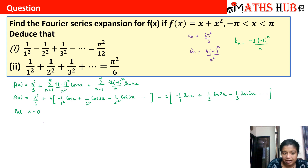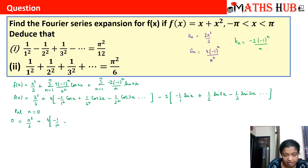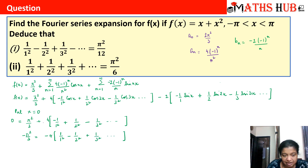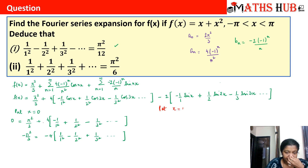Putting x = 0: f(0) = 0, and the sine terms vanish. So 0 = π²/3 + 4[−1/1² + 1/2² − 1/3² + …]. Rearranging: −π²/3 = 4·[−(1/1² − 1/2² + 1/3² − …)], giving 1/1² − 1/2² + 1/3² − … = π²/12. For the second deduction, we try x = π to make all cosine terms positive.